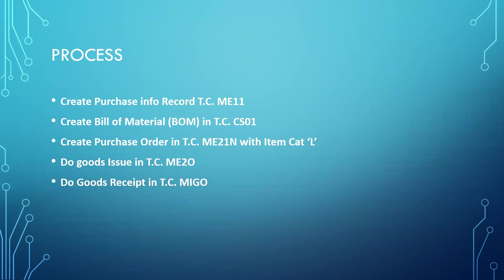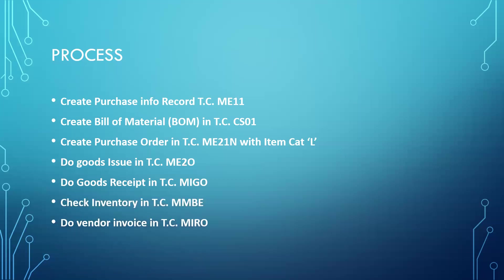The vendor sends us back the finished material. ME2O is for goods issued to the vendor, and MIGO is for goods received from the vendor. Next, we check the inventory. Finally, we do the vendor invoice using transaction code MIRO.